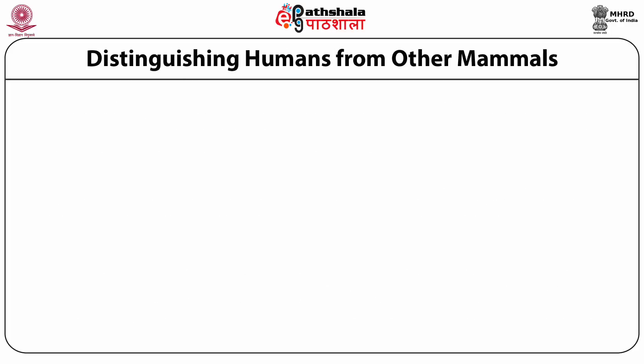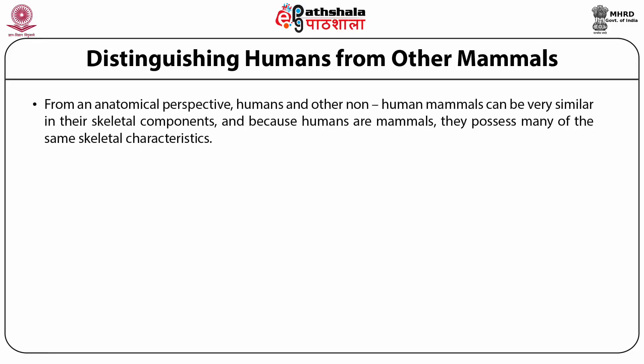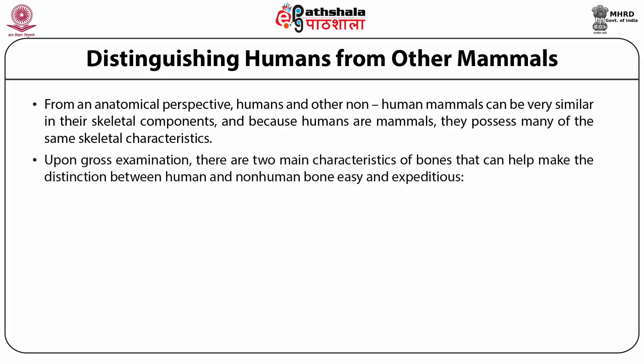Distinguishing humans from other mammals: from an anatomical perspective, humans and non-human mammals can be very similar in their skeletal components, and because humans are mammals, they possess many of the same skeletal characteristics. Upon gross examination, there are two main characteristics of bones that can help make the distinction between human and non-human bone quickly and expeditiously. The first is maturity.